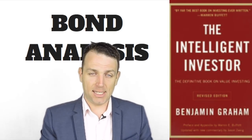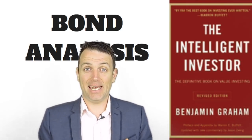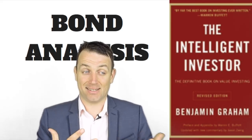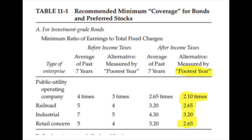The key with bonds is to see whether the company or government can pay the interest on their debt and can they refinance that debt in the future. If they can constantly refinance, the interest payment is the key. What Graham focuses on is the poorest year. You look 7 to 10 years in the past and look at the poorest year the company has had in relation to earnings, then compare that poorest year with the interest costs. That's perhaps the most conservative way to approach bonds, but you avoid nasty surprises.